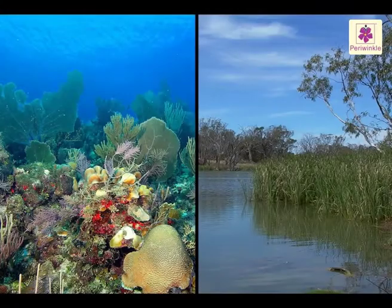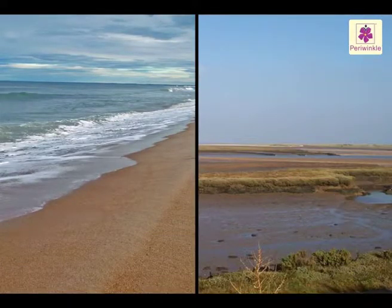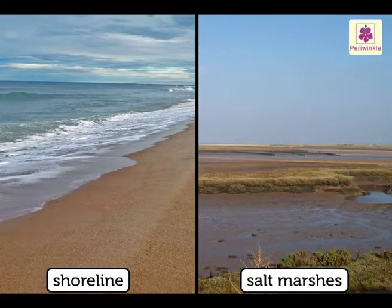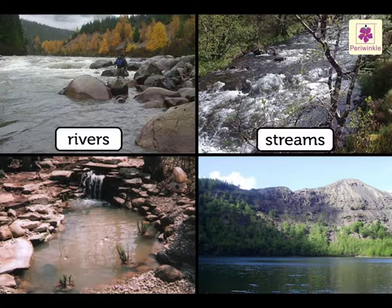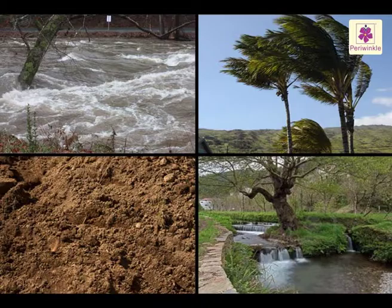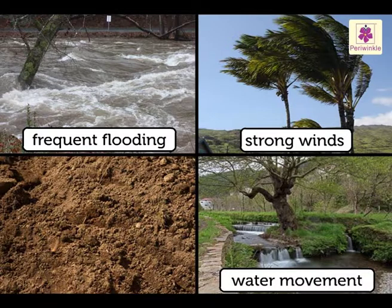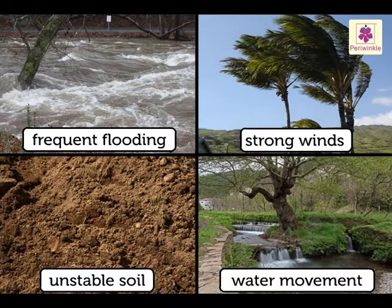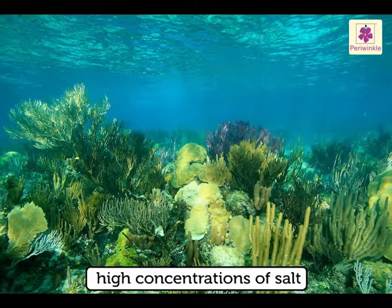Habitats. Aquatic plants survive in two main habitats: saline and freshwater. Saline areas include the shoreline and salt marshes. Freshwater plants survive in rivers and streams, on their banks, and in lakes and ponds. Aquatic plants are subjected to a lot of adverse conditions, like frequent flooding, strong winds, constant water movement, and unstable soil conditions. The salt water plants have to also endure high concentrations of salt.